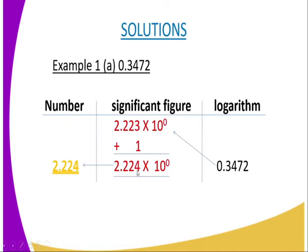You write it as 2.224 times 10 to the power zero, because the characteristic — the first digit of the logarithm — was zero, which represents the power when the number is written in standard form. Any number raised to the power zero equals one, so multiplying by 10^0 leaves the number unchanged. Our answer is 2.224.